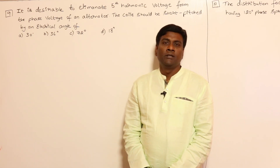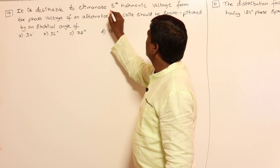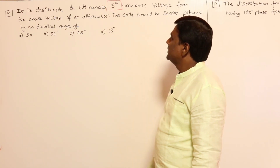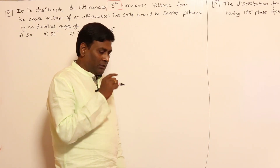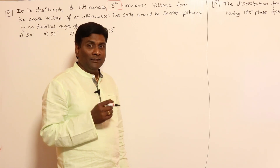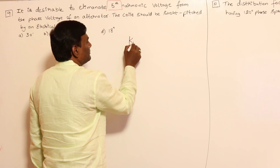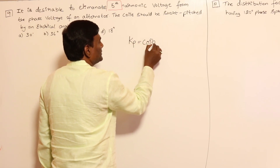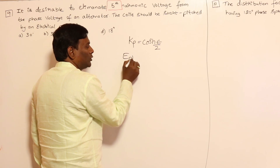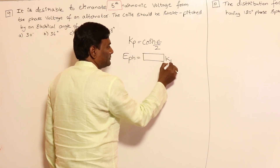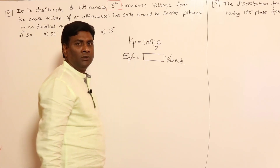In this session, let us take two more problems on alternators at no-load conditions. It is desirable to eliminate the fifth harmonic voltage from the phase voltage of an alternator. The coil should be short-pitched by an electrical angle. In the pitch factor discussion, we covered how to eliminate any harmonic component. The pitch factor kp equals cos(hε/2), and the total induced voltage per phase includes the factor kp × kd. If kp becomes zero, that harmonic component is eliminated.